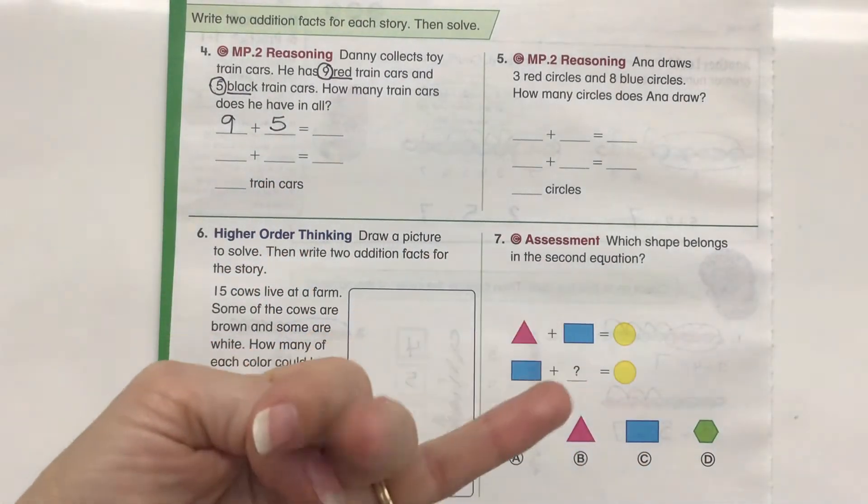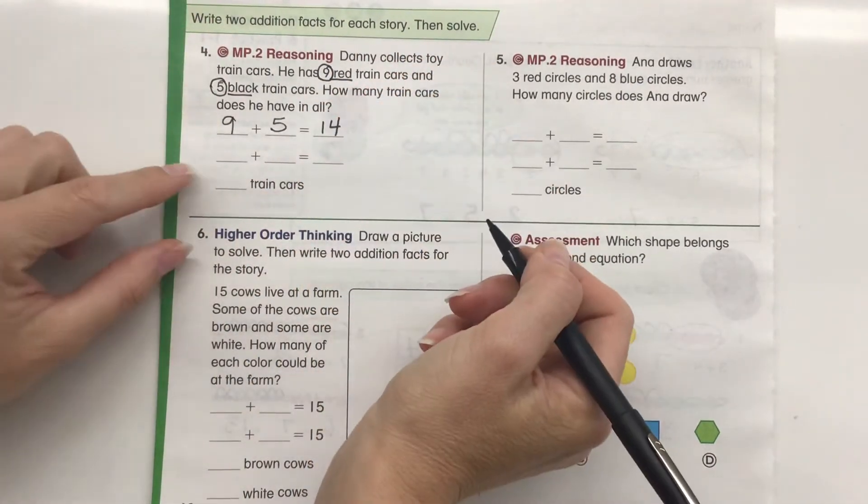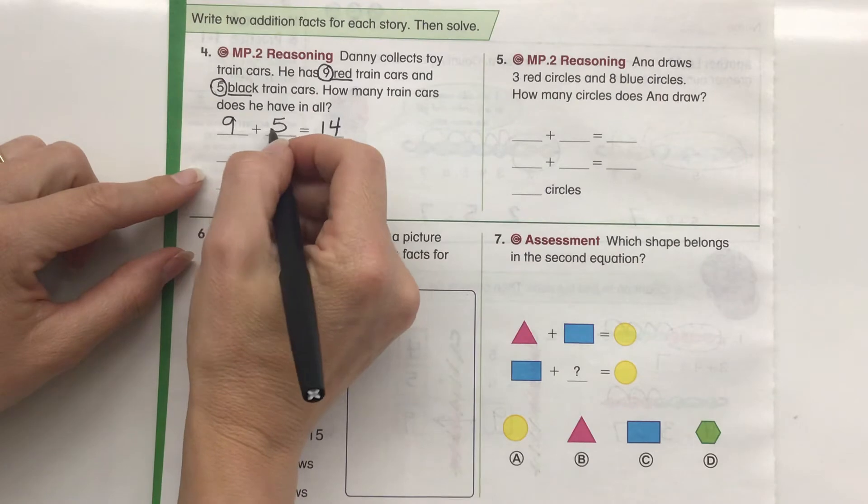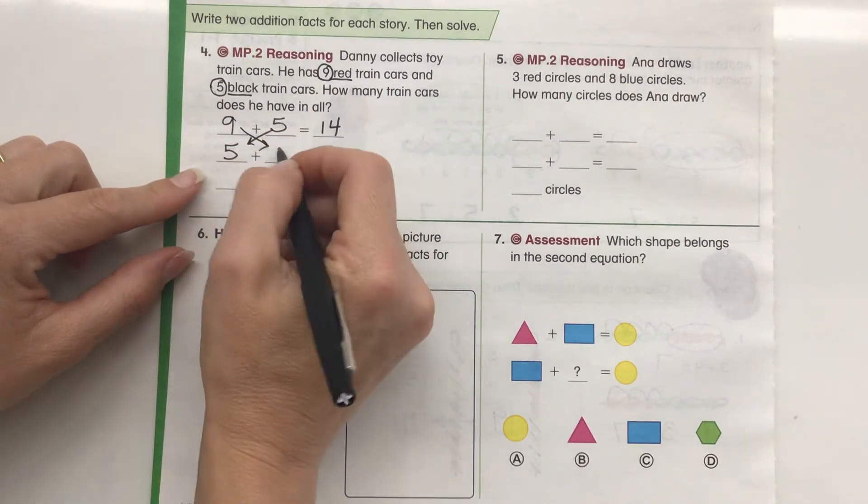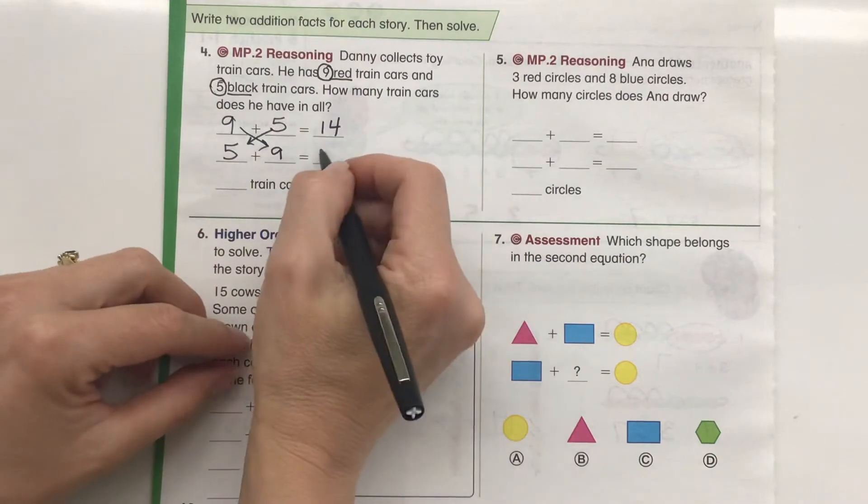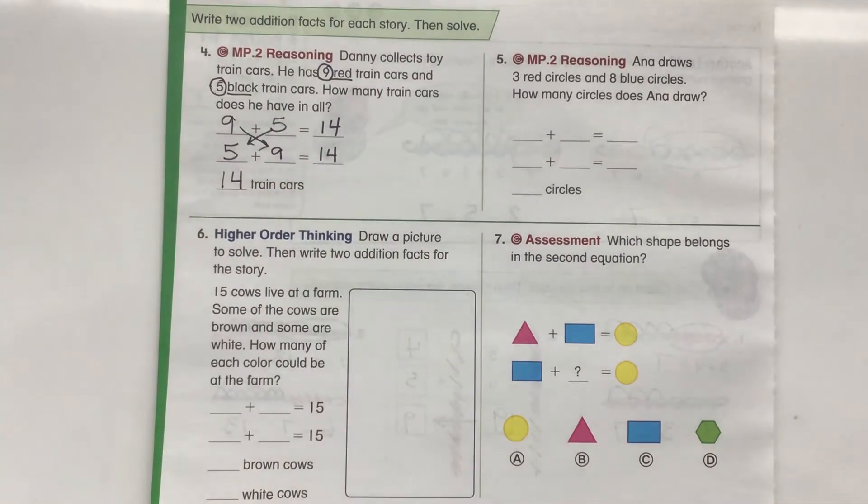9, 10, 11, 12, 13, 14. Now I want to switch the addends. So I'm going to switch and have that be 5 black train cars plus 9 red train cars. My sum is going to be exactly the same for a total of 14 train cars. I don't even need to go through and check them again.